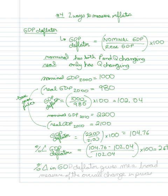The percentage change in GDP deflator gives me a broad measure of the overall change in prices. Now this is just one of the methods of solving for the price changes.